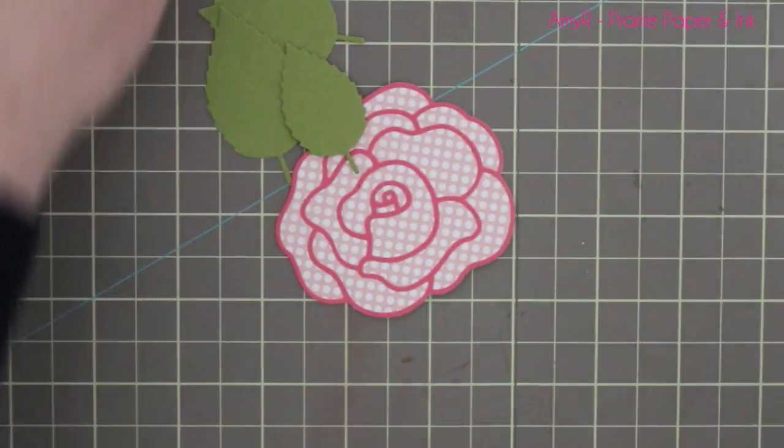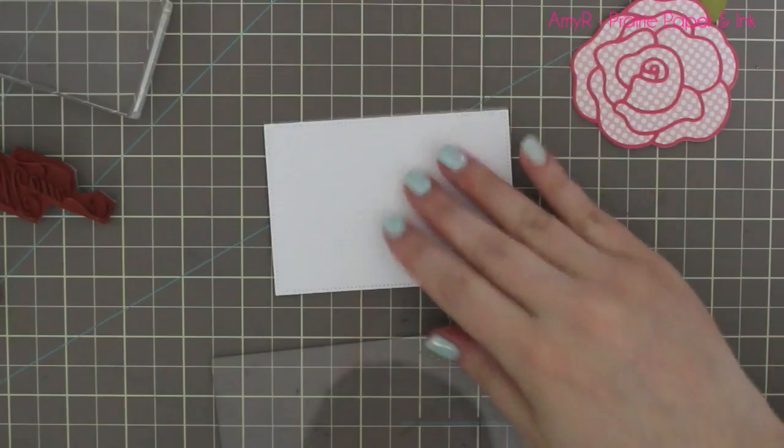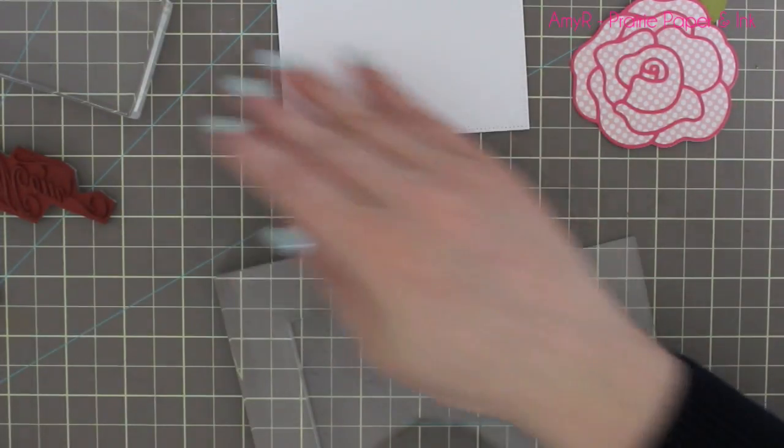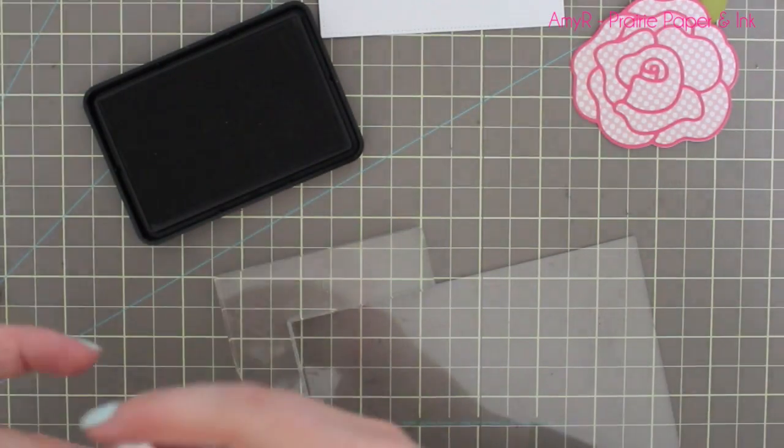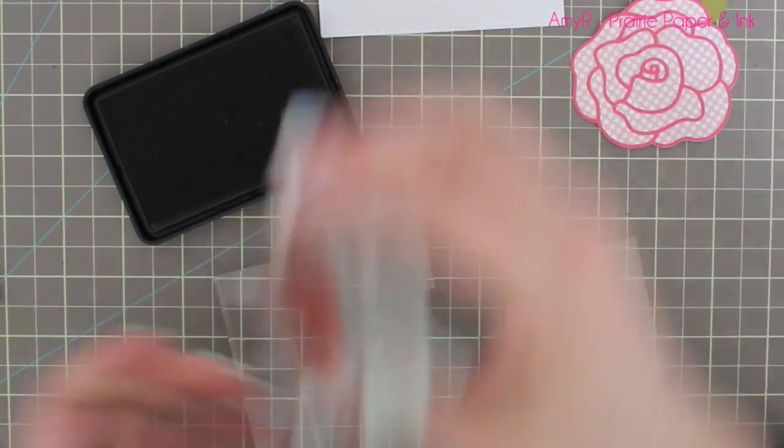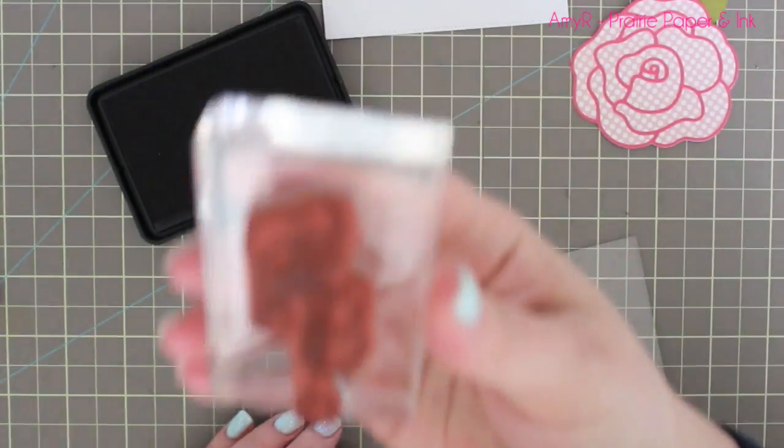I grabbed the piece of white cardstock that I die cut with the Pierced Rectangle Stacks dies, my Hero Arts black ink, and then these are some sentiment stamps from my All About Mom sentiment set.